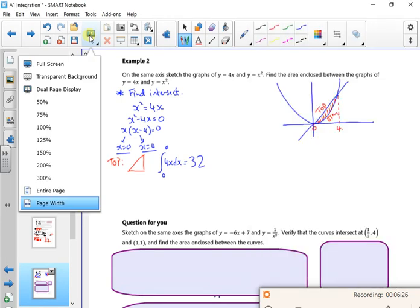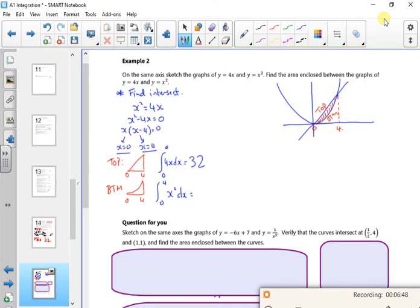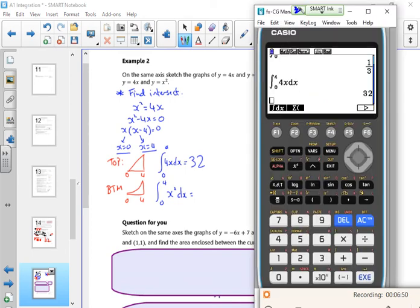And then, put back on full screen so you can see easier. I've got the bottom one. So the bottom one looks like that. It's the area enclosed. So this is between 0 and 4. So the bottom one, between 0 and 4 is my x² dx. Just going back onto the calculator. So my x², 0 to 4.